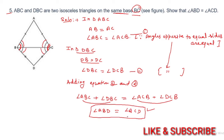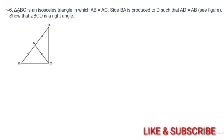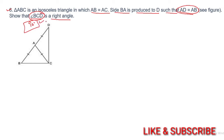Next question, question number 6. Triangle ABC is an isosceles triangle in which AB equals AC. Side BA is produced to D such that AD equals AB. We need to show that angle BCD is a right angle, i.e., 90 degrees.